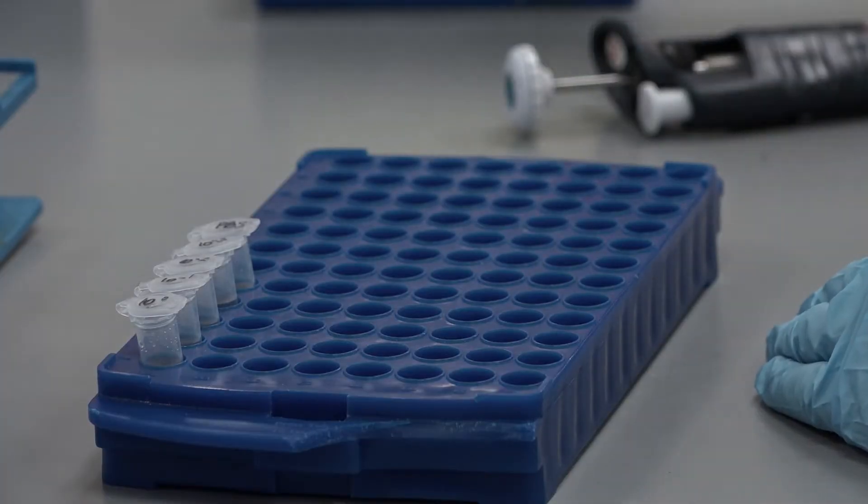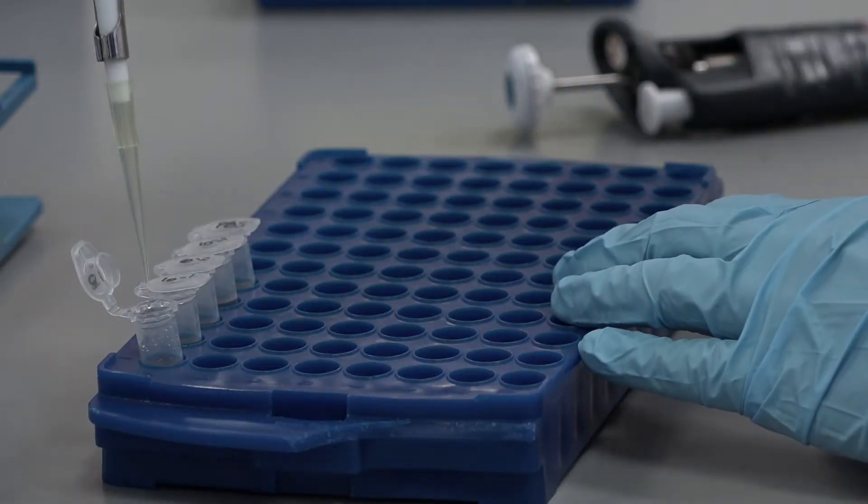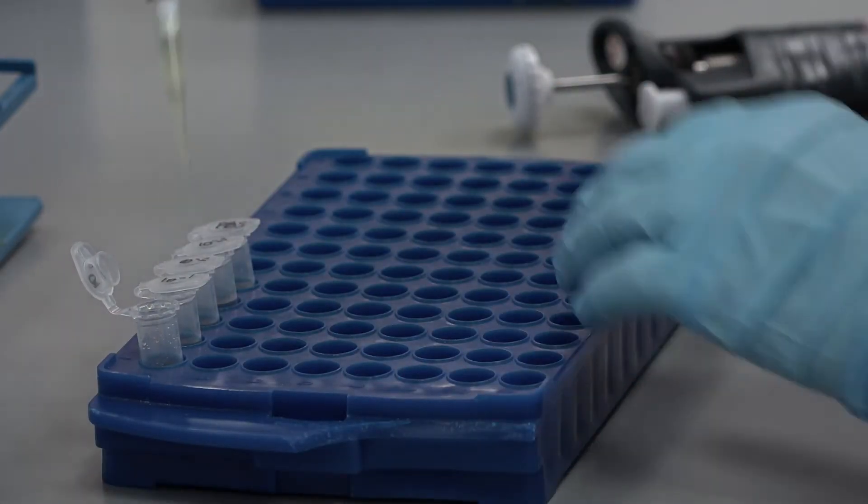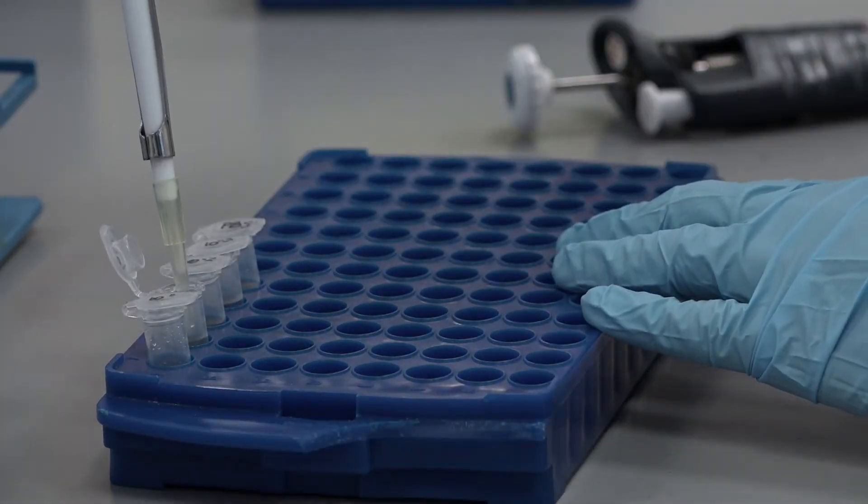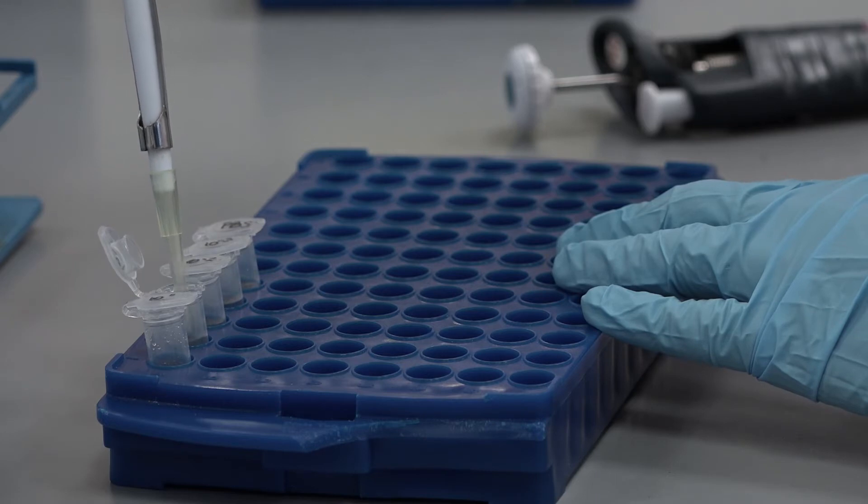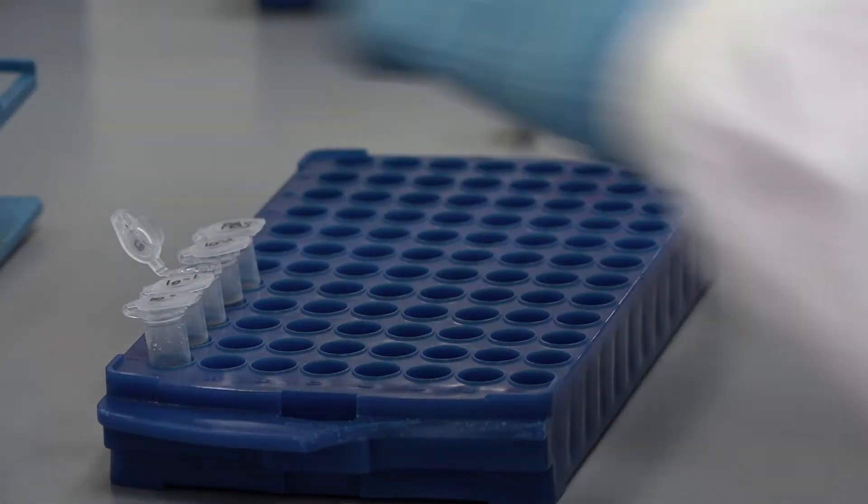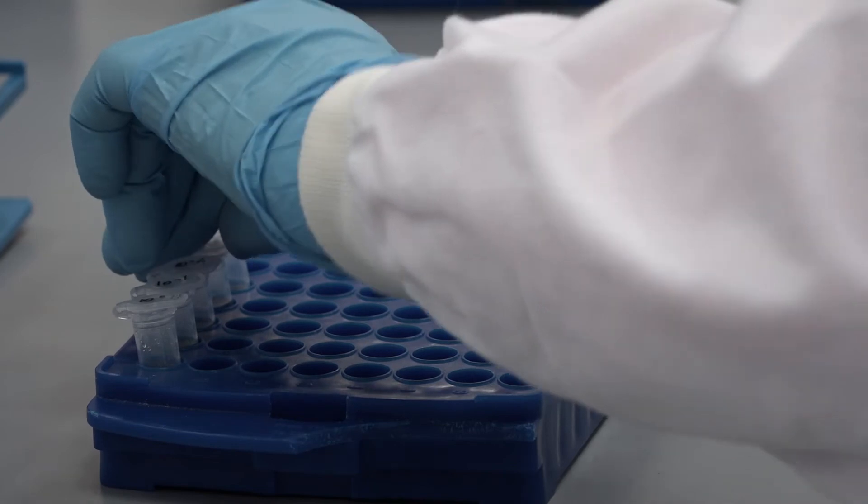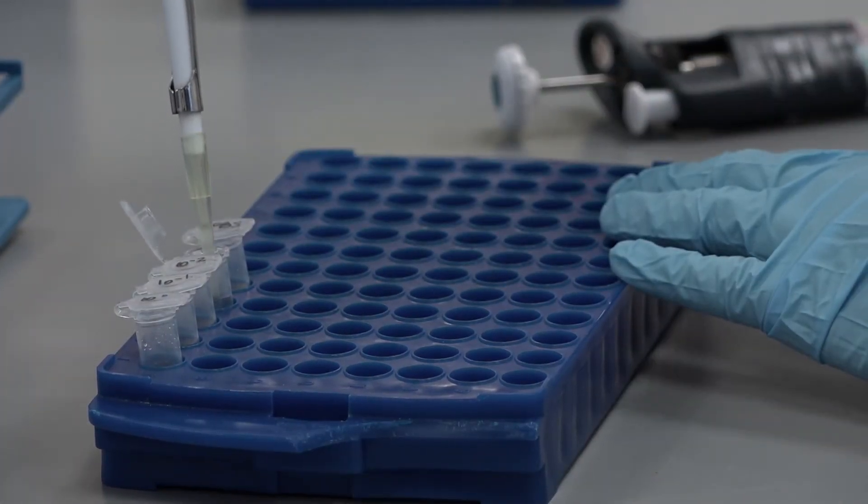Set up the dilution series in sterile Eppendorfs to a total volume of 1 mil with sterile PBS. 900 microliters of PBS mixed with 100 microliters of the overnight culture adjusted to an OD of 1 will give you the minus 1 dilution. 900 microliters of PBS mixed with 100 microliters of the minus 1 dilution will give you the minus 2 dilution. For the minus 3 dilution, take 900 microliters of sterile PBS and add 100 microliters of the minus 2 dilution.